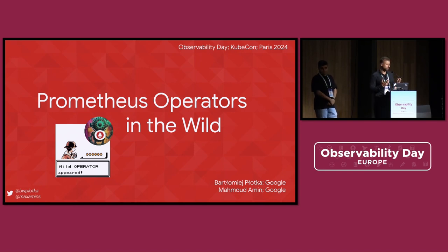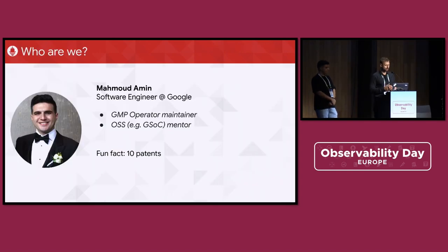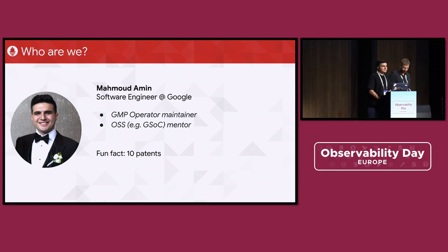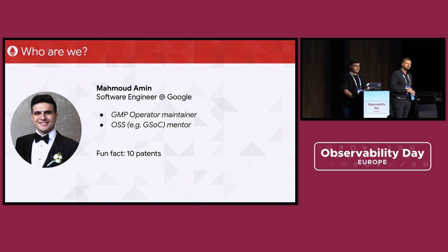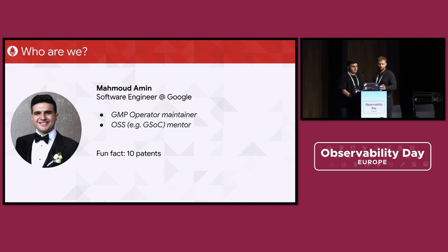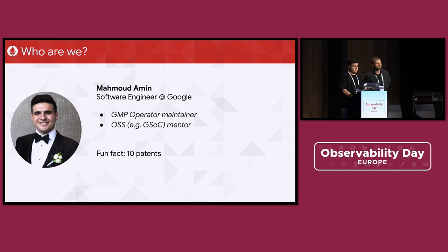Before we start, a short introduction. I have Max with me. My name is Mahmoud Amin, I also go by Max. I am a software engineer at Google, and I'm a GMP operator maintainer. I was also an open source mentor on a few projects like GSoC. A fun fact about me is I have 10 patents. I used to be a closed-source developer, but it's more fun to develop in the open.